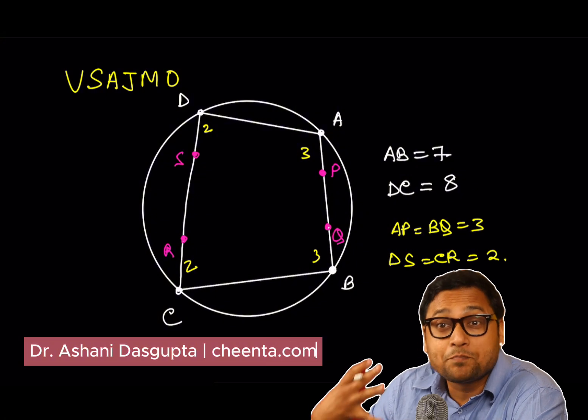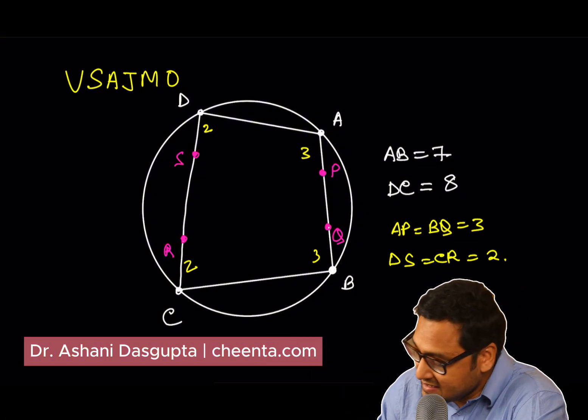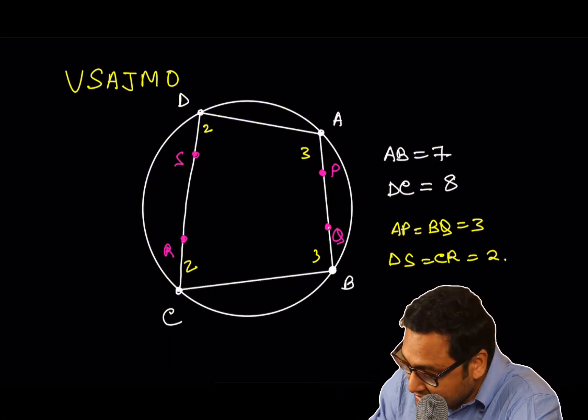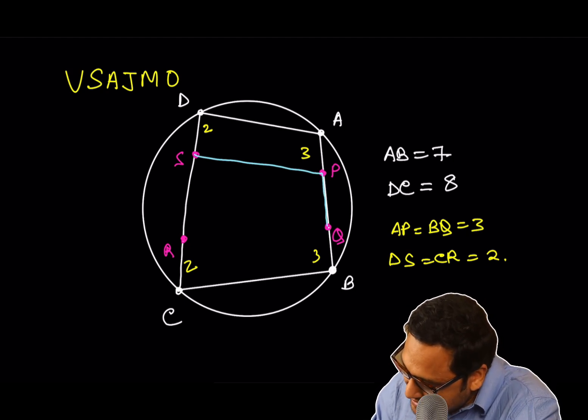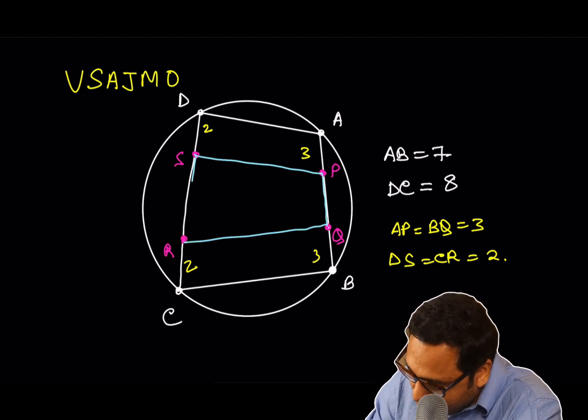We want to show that P, Q, R, S is a cyclic quadrilateral. So P, Q, R, S is this. And it is a cyclic quadrilateral.